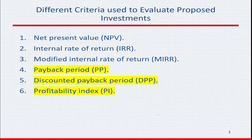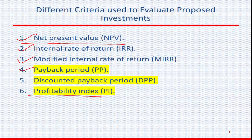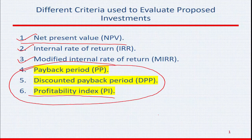Suppose you have an investment plan which requires huge investment at the beginning of the period and it will generate return or cash flows in the future. How do you make an investment decision like that? There are some tools that help us answer this kind of question. I have listed the most commonly used basic tools, from net present value to the profitability index. In this video I'm going to explain how to use payback period, discounted payback period, and profitability index to help us decide whether to undertake the investment or not.